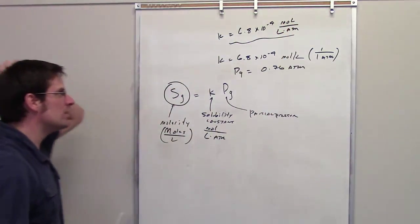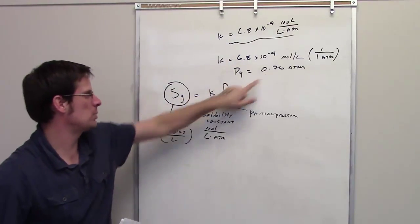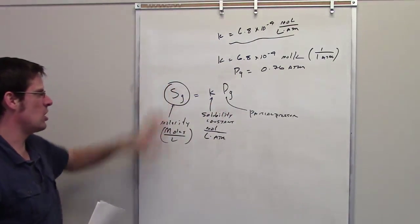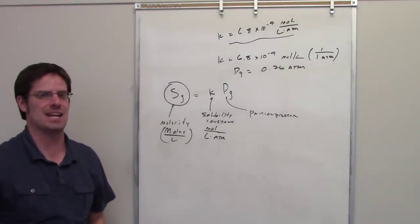So really, all you have to do is take K, put it in here, take the partial pressure, put it in for there, and then solve for the concentration. And that will give you the answer.